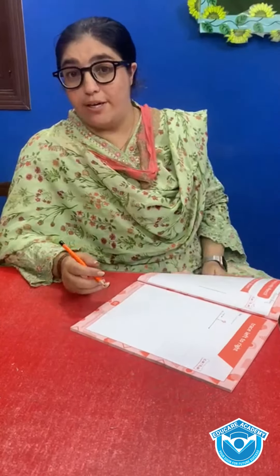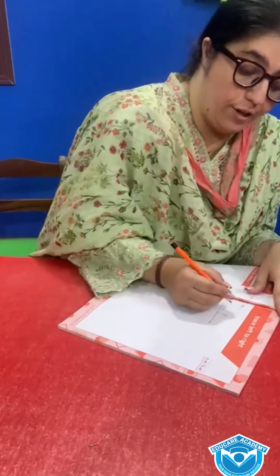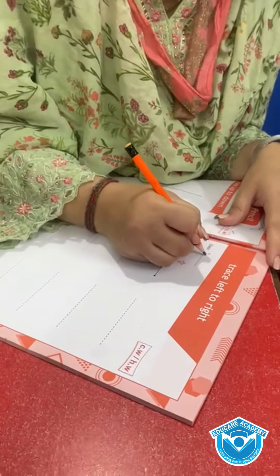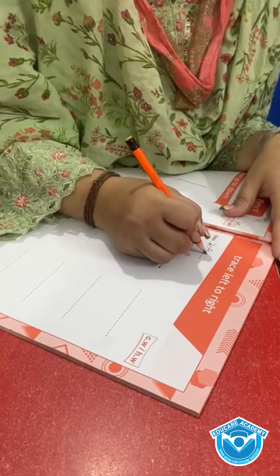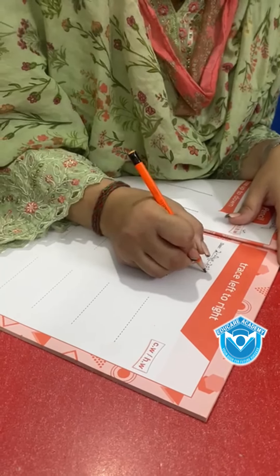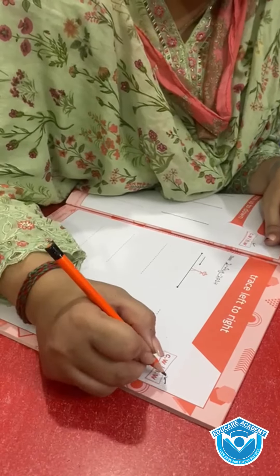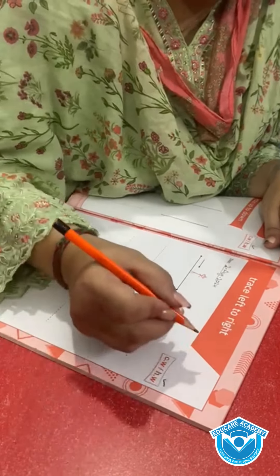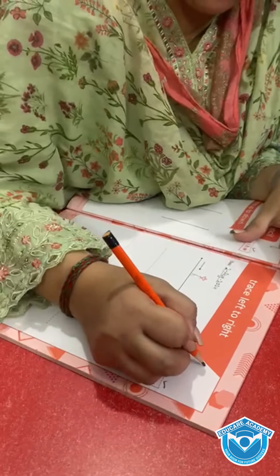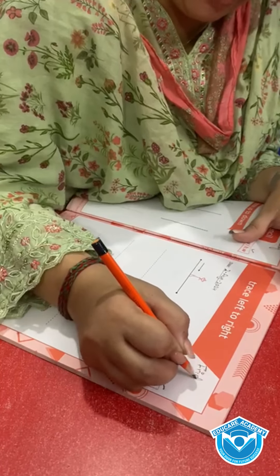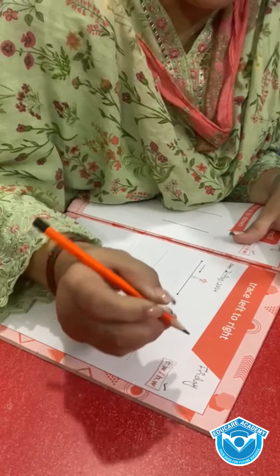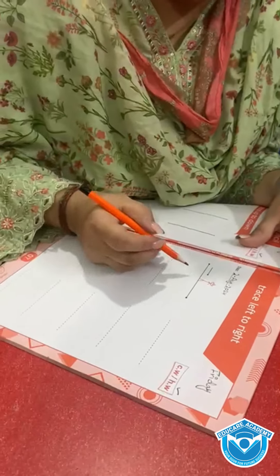I hope you all are well and today we have a math class. First of all, take out page number 7. We can mention the date: 2nd August 2024. This is a homework, so we have to write the homework column and mention the date. The date and the day are compulsory.